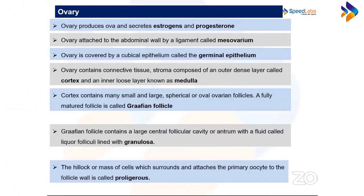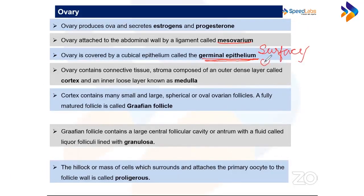The ovary produces ova and secretes estrogens and progesterone. It is connected to the abdominal wall by a ligament called the mesovarium. The ovary is covered by cuboidal/surface epithelium — incorrectly called germinal epithelium, since the germ cells actually migrate from the yolk sac into the ovary. The ovary has two regions: cortex and medulla, with follicles in the cortex. The fully matured follicle is called the Graafian follicle.